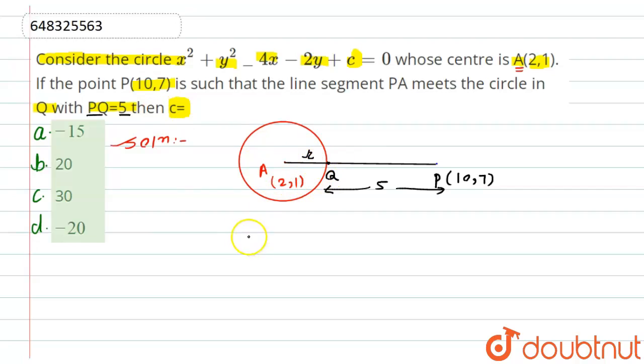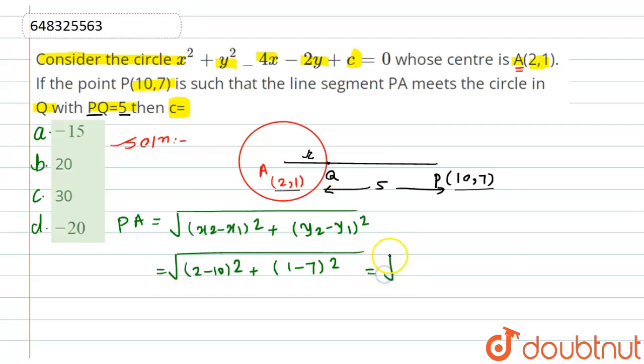We have the coordinate of A and coordinate of P. By using the distance formula, I can find it. PA will be equal to the root of (x2 minus x1) squared plus (y2 minus y1) squared. This equals root of 2 minus 10 squared plus 1 minus 7 squared.